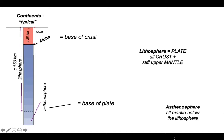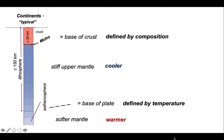So what does this mean? The upper mantle is stiff because it is cooler; the mantle below is softer because it's warmer. What's defining these boundaries? The base of the crust is defined by composition — we have different minerals within the crust than within the mantle. But the base of the plate, the difference between lithosphere and asthenosphere, is defined by temperature.